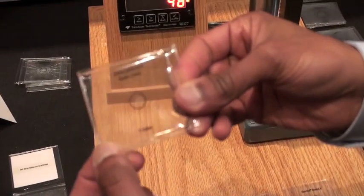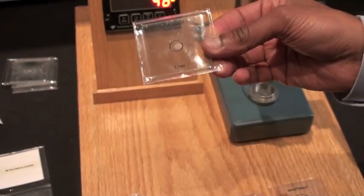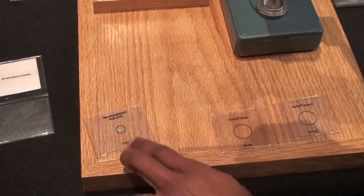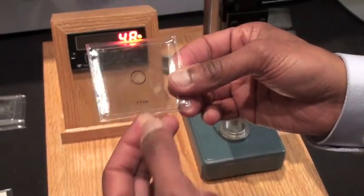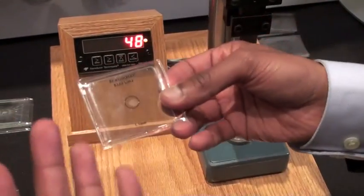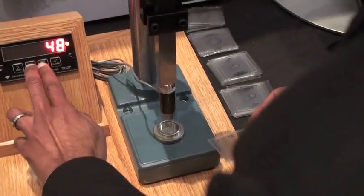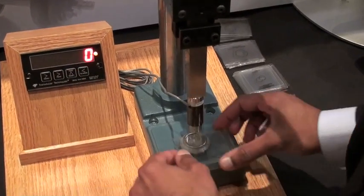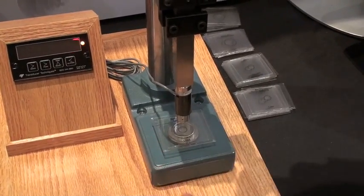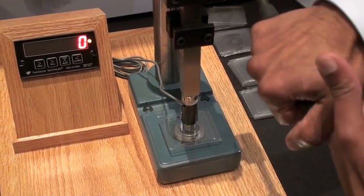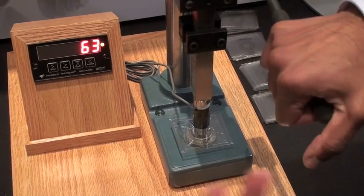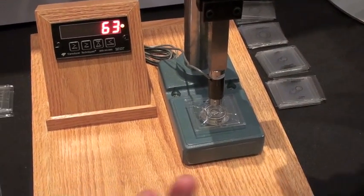Here's a piece of strengthened soda-lime glass. This is the same glass, 1.1 millimeter thick, but it's been iron-exchanged, so it's been strengthened. I'll reset my load here. 63 pounds. Not a whole lot more.